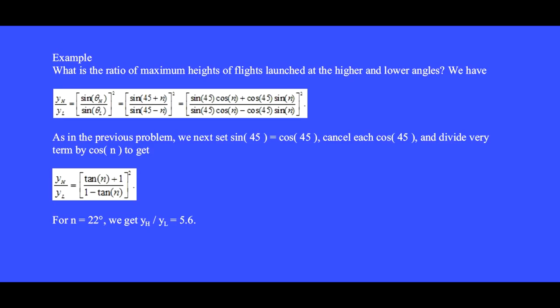Please fill in all the algebra steps to obtain these results. What is the ratio of maximum heights of flights launched at the higher and lower angles? The height goes as the sine of the launch angle squared, so we form the ratio to cancel common factors. We have y sub h divided by y sub l equals sine theta h over sine theta l, squared. The high launch angle can be written as 45 plus n and the low launch angle as 45 minus n, and we use the trig identity to obtain this equation. Since sine of 45 and cosine of 45 are the same number, these all cancel.